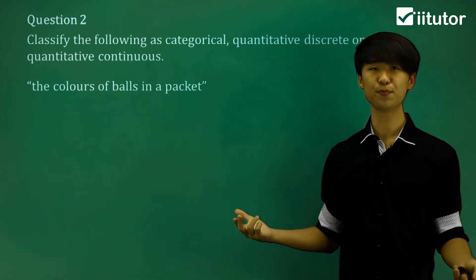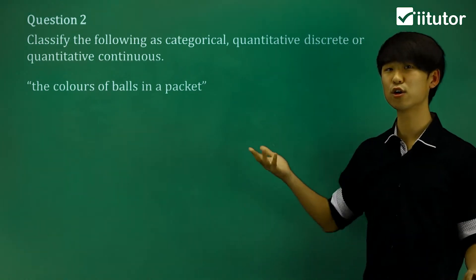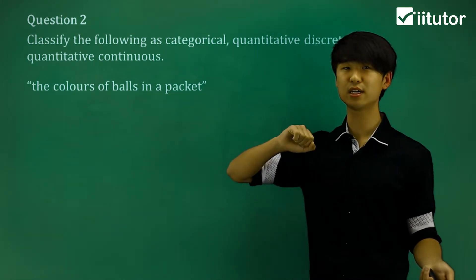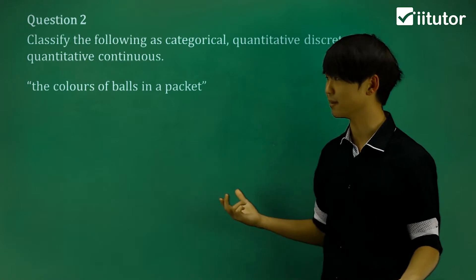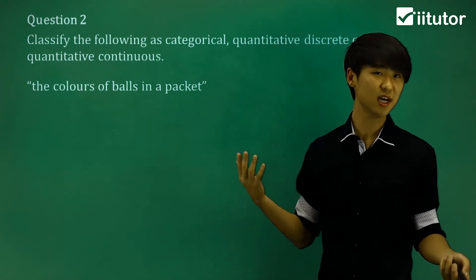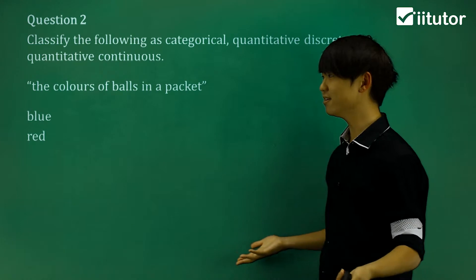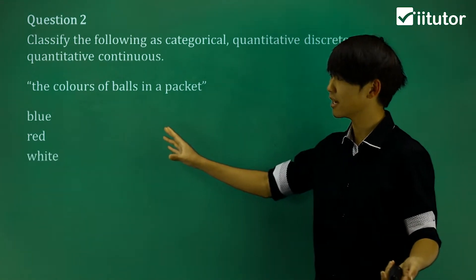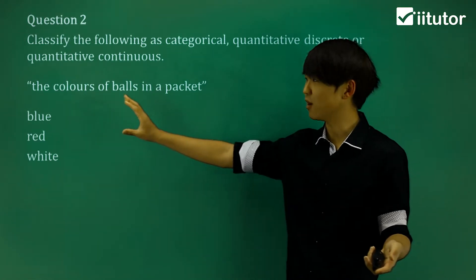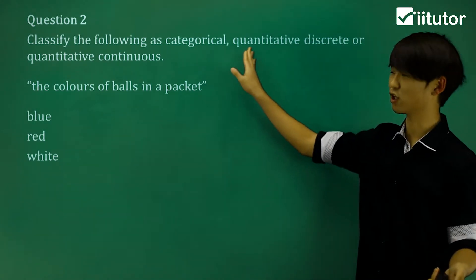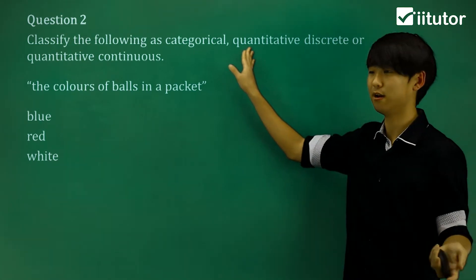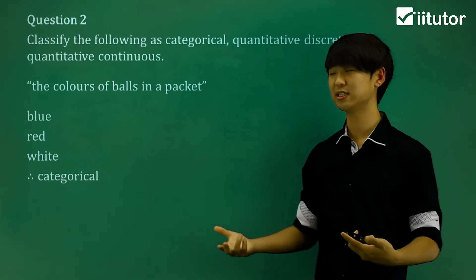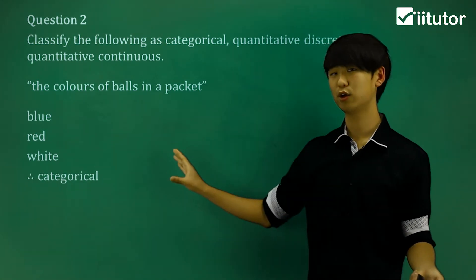Question two: classify as either categorical, quantitative discrete, or quantitative continuous. We have the colors of balls in a packet. Examples are the color blue, the color red, or the color white. We can see there is no numerical value — they're just information about what color they are. If it's not a numerical value, it's not going to be a quantitative variable. So this is going to be categorical — a nice example of what a categorical variable is.